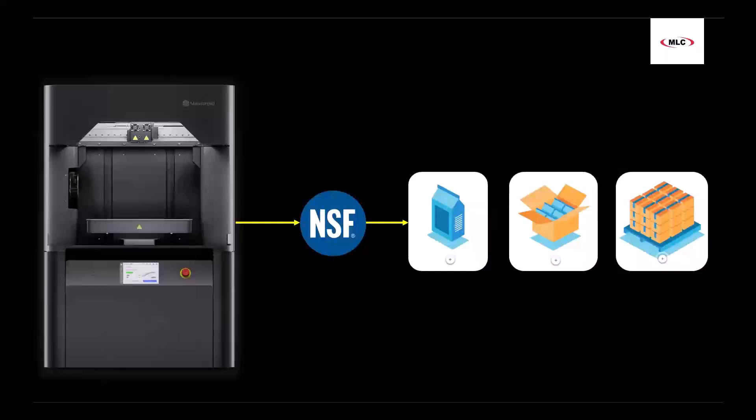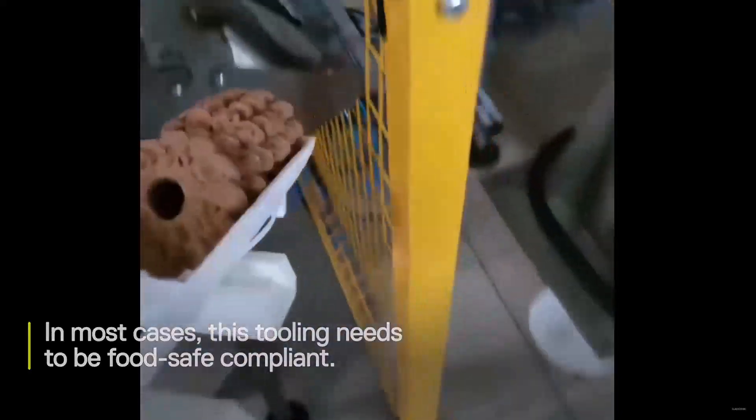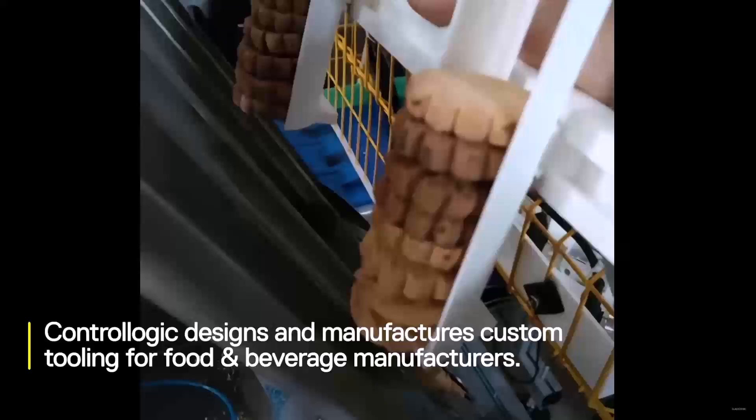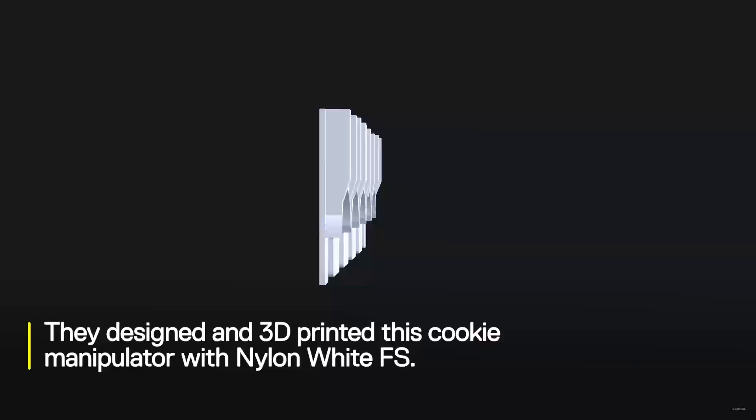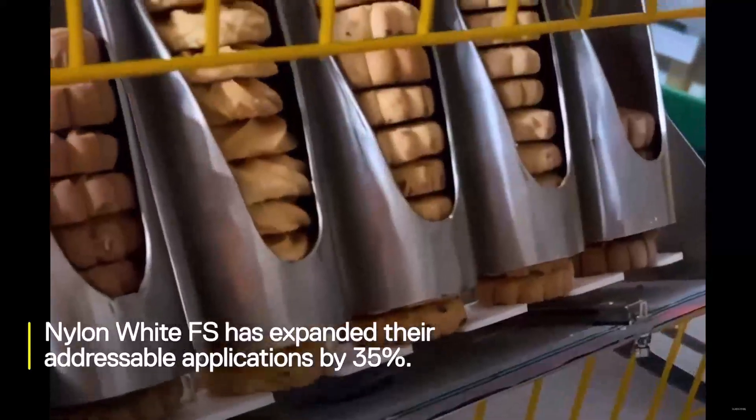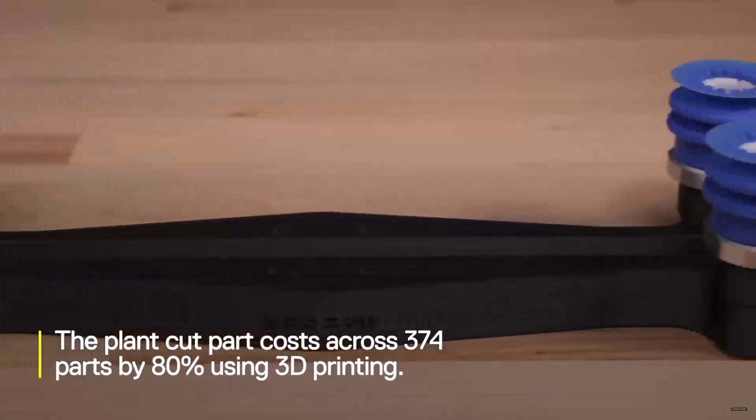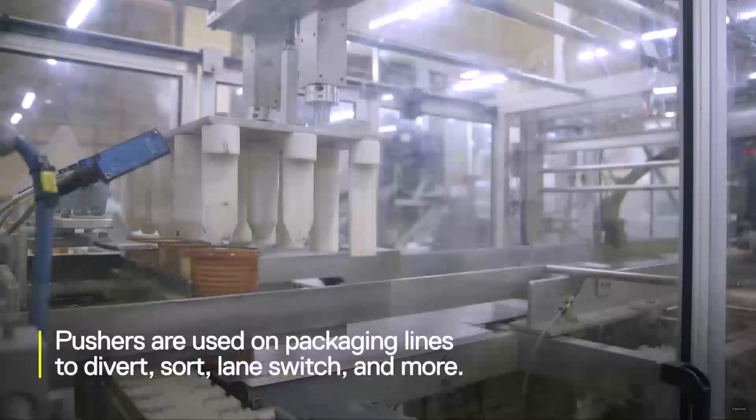With the introduction of food safe materials, 3D printed parts can now be present in food production areas and even touching the food, which just expands the range of applications, saving food and beverage companies time and money. For example, ControlLogic designs and manufactures custom tooling for the food and beverage industry, including 3D printed food contact tooling like this cookie manipulator. Access to Mark Ford's Nylon White FS has expanded their applications by 35%. They and others have seen rapid ROI by 3D printing their own vacuum grippers to handle food packaging of varying sizes, and custom pushers for a host of different products and conveyors.